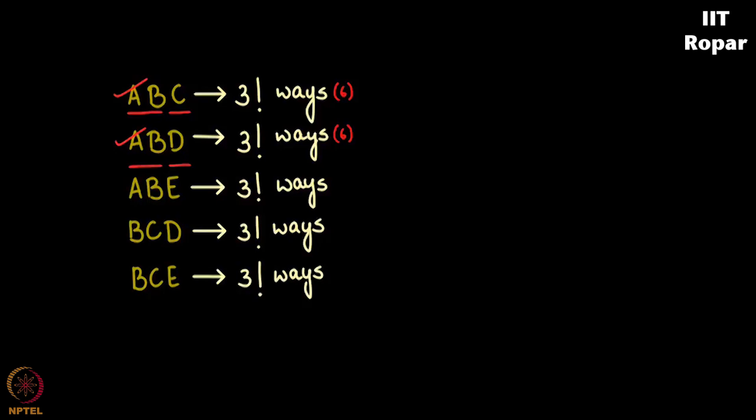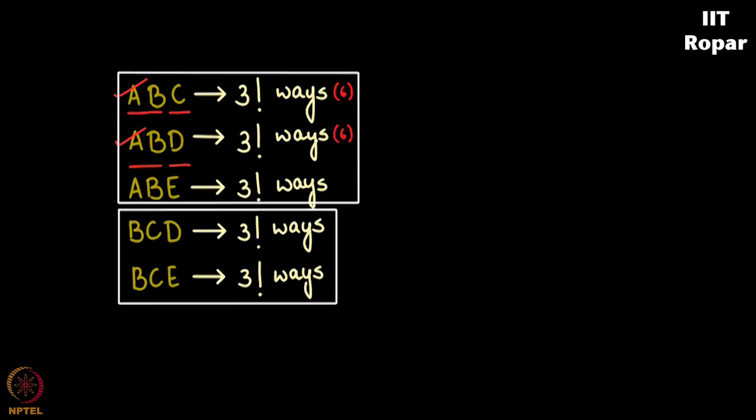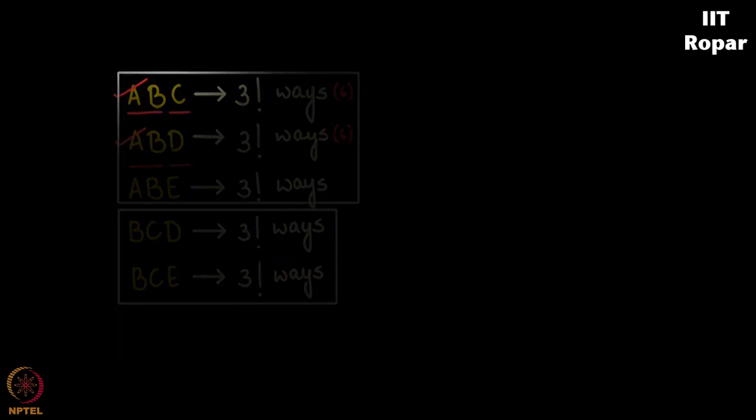With A, B we had three possibilities and each possibility had three factorial ways. With B, C we have only two because we are excluding the possibility with B, C included, including A, because it is exhausted already.